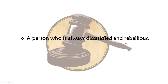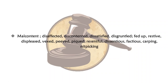A person who is always dissatisfied and rebellious — never satisfied, always complaining and rebelling against something. What would that person be called? The answer is malcontent. Mal means bad. Synonyms are disaffected, discontented, dissatisfied, disgruntled, fed up, restive, displeased, vexed, peeved, piqued, resentful, factious, carping and nitpicking.